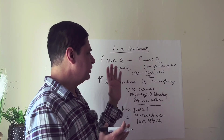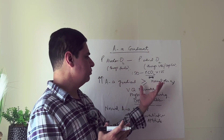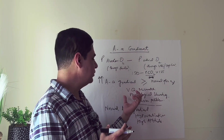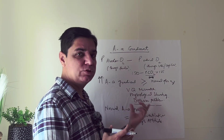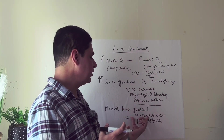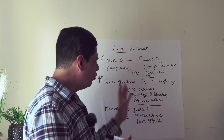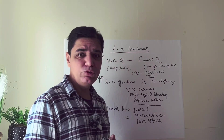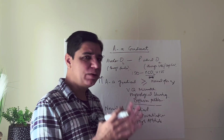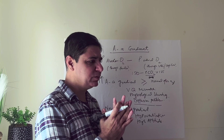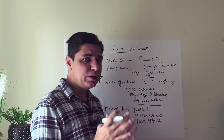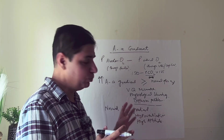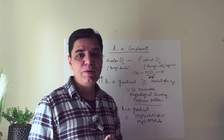The AA gradient increases with age. If it is greater than normal for that age, think about VQ mismatch, physiological shunting, and diffusion problems. If it is normal, think about hypoventilation-related issues and high altitude. I hope this lecture on calculating the AA gradient has been helpful. If you have any questions, put them in the comment section below — I'll be happy to answer. Have a good day, take care, and bye.